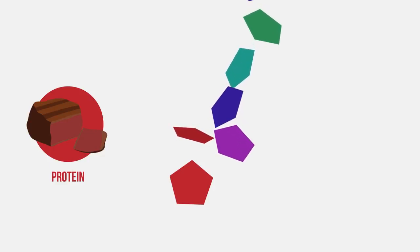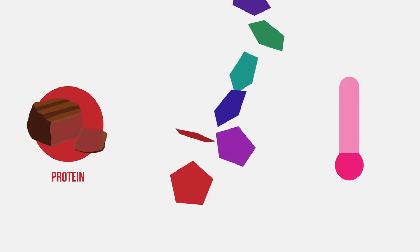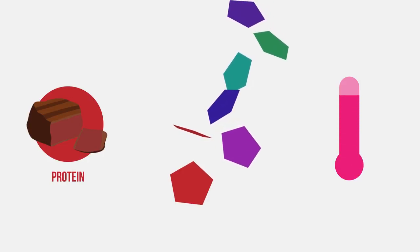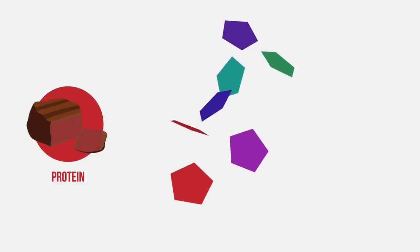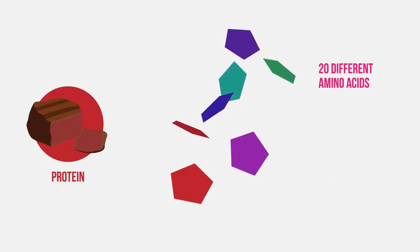Because enzymes are proteins and the bonds holding proteins together are weak, this is why enzymes denature above certain temperatures. The bonds are broken and the structure of the protein is changed. There are 20 different amino acids that make up proteins.